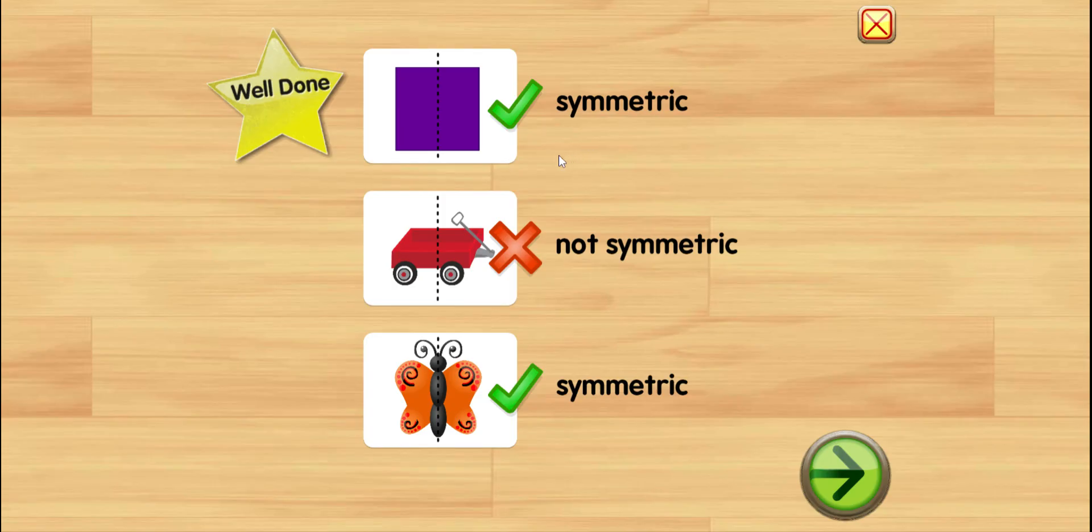So let's review. This purple square is symmetric. It's the same on each side. This wagon, not symmetric. It's different on each side. This pretty butterfly is symmetric. It's the same on each side.